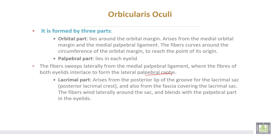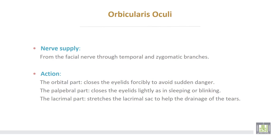The lacrimal part arises from the posterior lip of the groove of the lacrimal sac, called the posterior lacrimal crest of the skull, and also from the fascia covering the lacrimal sac. Its fibers wind laterally around the sac and blend with the palpebral part of the eyelids. Nerve supply is from the facial nerve through the temporal and zygomatic branches. The orbital part closes the eyelids forcibly to avoid sudden danger; the palpebral part closes the eyelid lightly as in sleeping or blinking; the lacrimal part stretches the lacrimal sac to help in the drainage of tears.